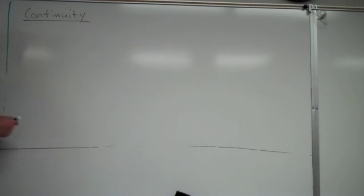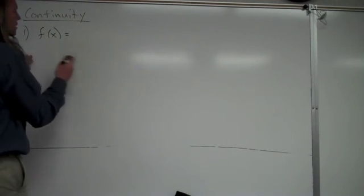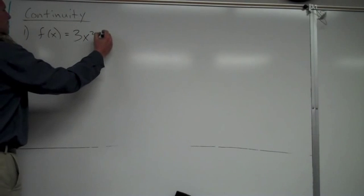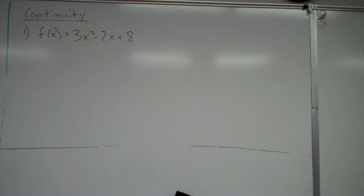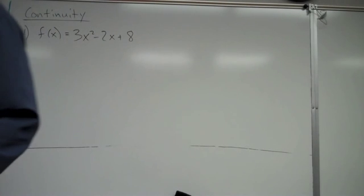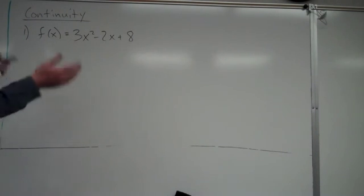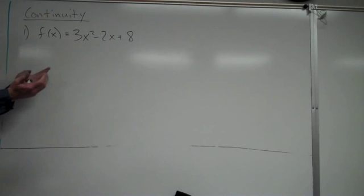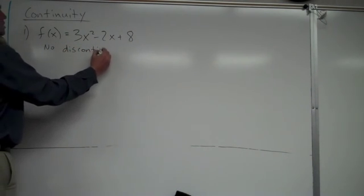Let's look at a few functions and figure out if there are any discontinuities. For a function like a parabola — something like x squared — the main thing to check is whether the denominator equals zero anywhere. In this case there is no denominator; it's just a parabola, which is continuous everywhere. There are no discontinuities.